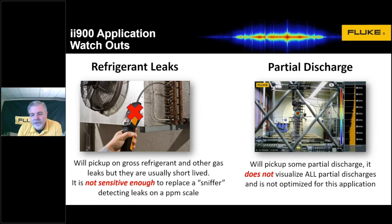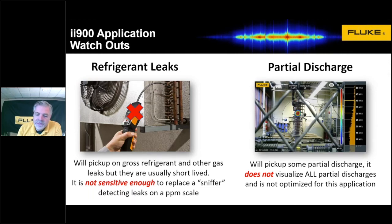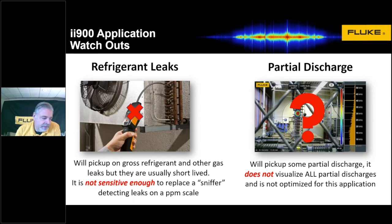Let's talk quickly about partial discharge. Customers were coming back to us — they bought an II900 for production quality issues or leak detection, and then the electrical department got their hands on it and said they could see PD. The problem is that partial discharge begins at a higher frequency than 50 kilohertz. Once it gets down to around 50 kilohertz, yes, we can start to see it with an II900, but it was problematic in terms of fully supporting the application because we couldn't see it soon enough to comfortably say we would be able to detect PD.